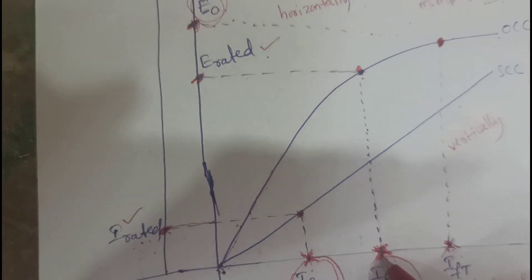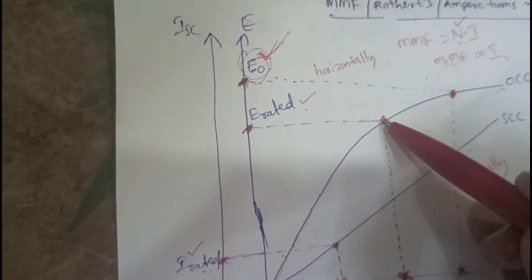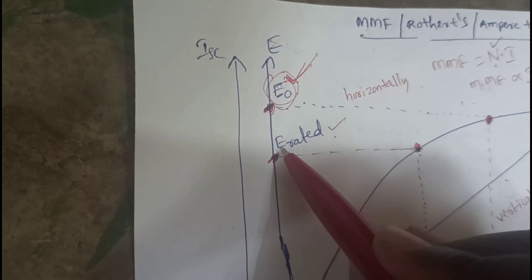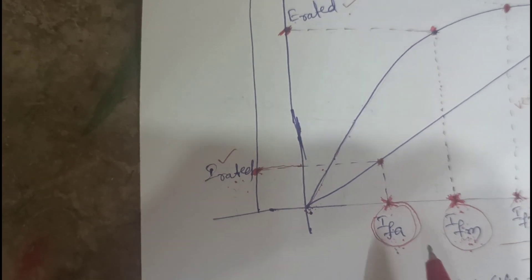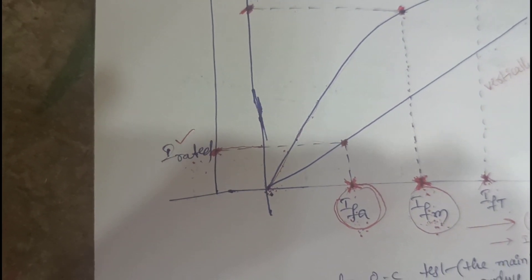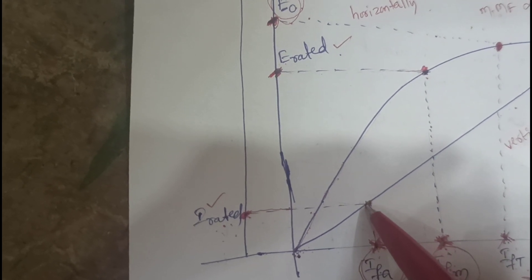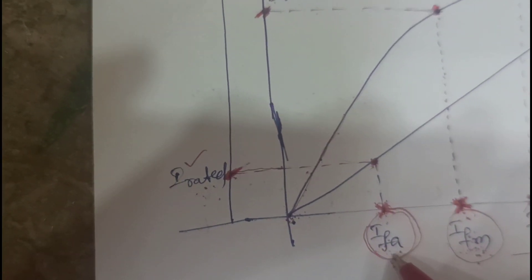From the IFM point, draw one vertical line up to the OCC curve. Then from the IFA point, draw a horizontal dotted line to get the rated voltage value. From the IFA point, draw a vertical line up to the SC curve, then draw a horizontal line to the field current axis to get the rated short circuit current. This gives us both IFA and IFM.